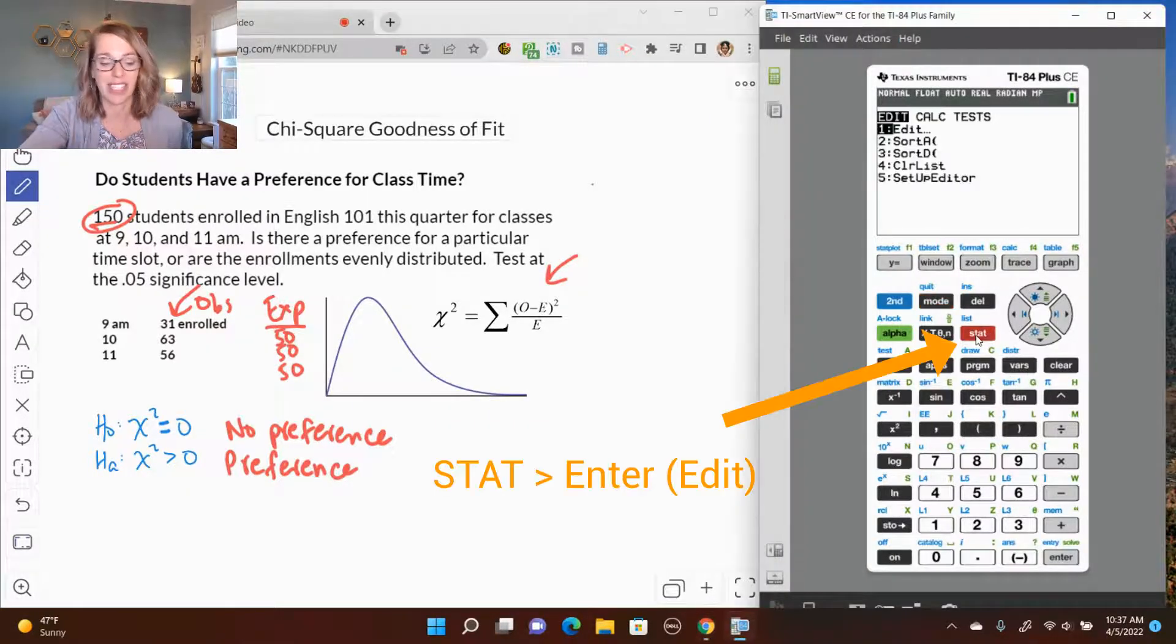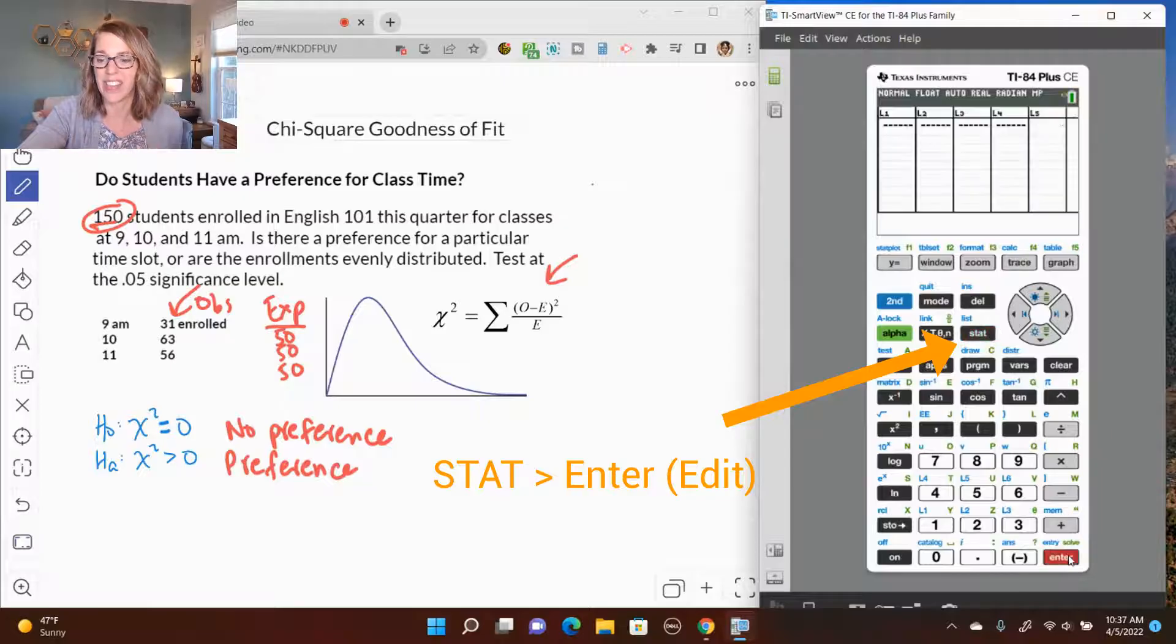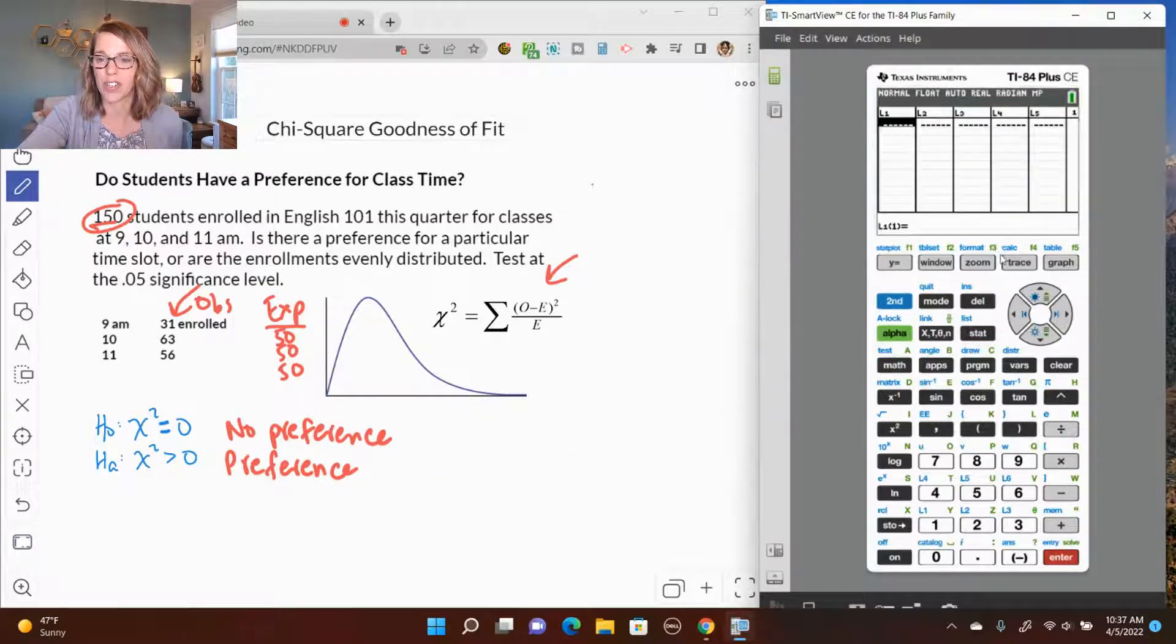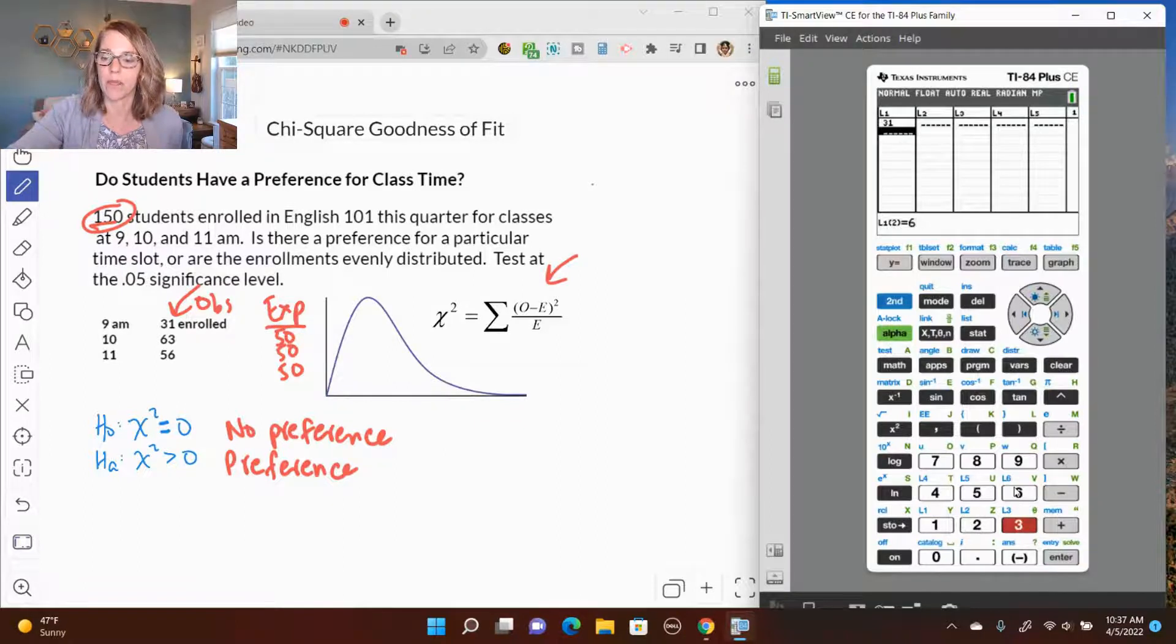To do that, I'm going to enter it into a list. I'm going to go into Stat and then Edit, so I just click Enter. I'm going to use L1 and L2. If you've got data in L1 or L2, arrow up to the list name, hit Clear, and then Enter. I'm going to go ahead and enter these. My observed is 31, 63, and 56.